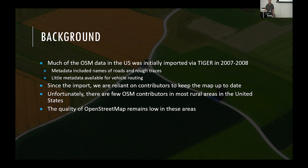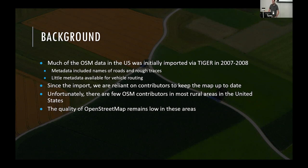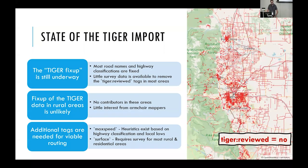Since then, OSM has been really reliant on contributors to clean up that data — the TIGER fix-up, if you will — and to keep those roads up to date. But especially in rural areas, the flyover states, there's really not many OSM contributors. Even in cities, we have very few contributors in the US per unit area. So especially in rural areas, the quality of the road network and the associated metadata with roads is pretty low. A lot of the road names and highway classifications are fixed, and that's how we have a nice base map. But actual review of the TIGER data, especially in rural areas, is unlikely.